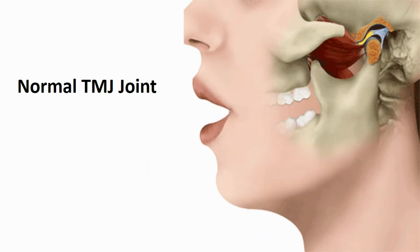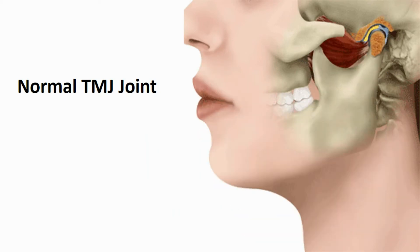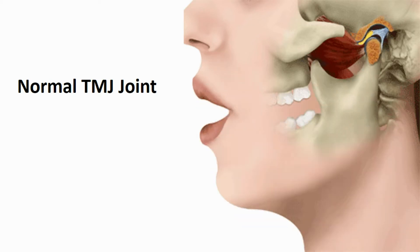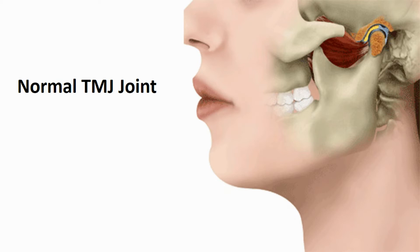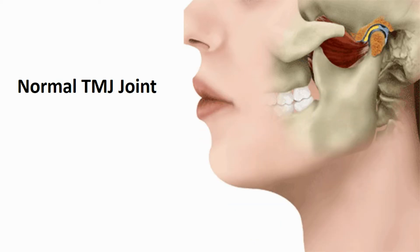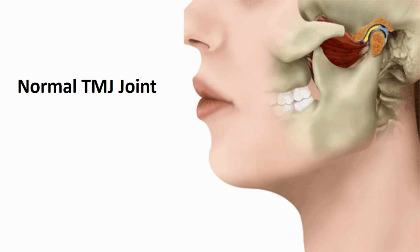Before explaining the difference between two types of disc displacement, in a normal joint the thin intermediate zone of the disc is always interposed between the condyle and the temporal bone during all phases of opening and closing. This protects the articular surfaces when the joint is in function, and the constant contact of the condyle with the intermediate zone means there will be no friction between the condyle and the articular fossa.